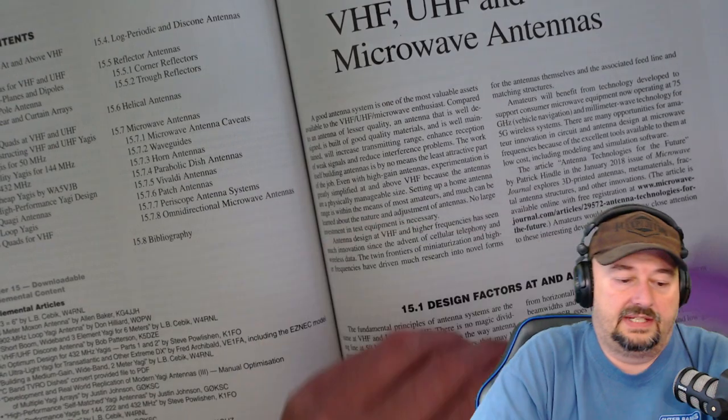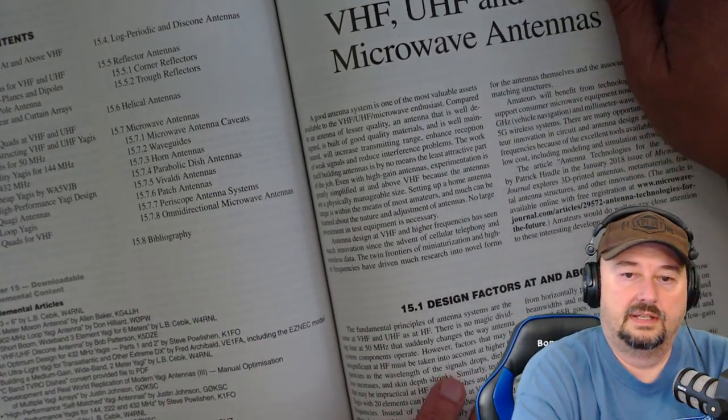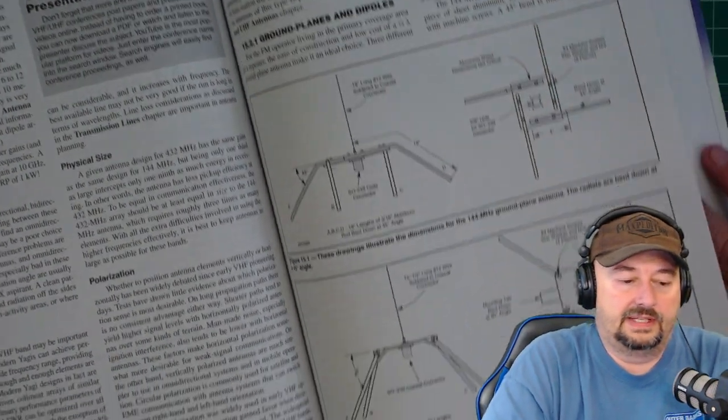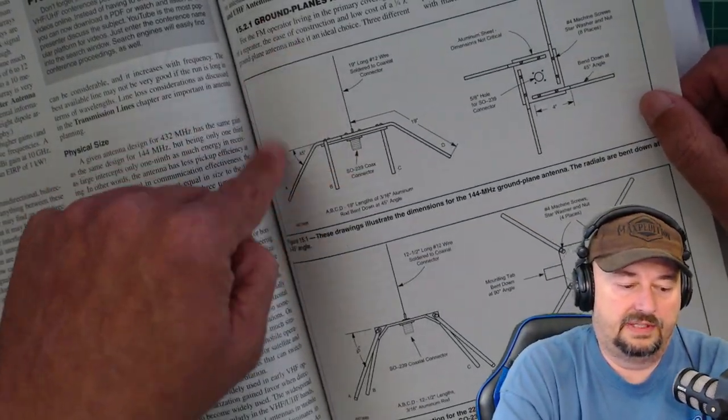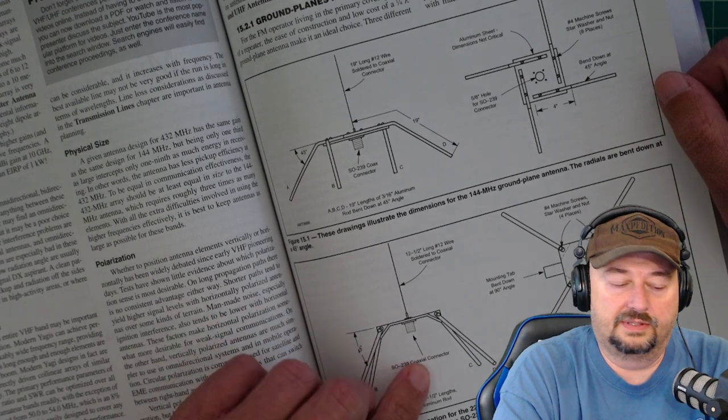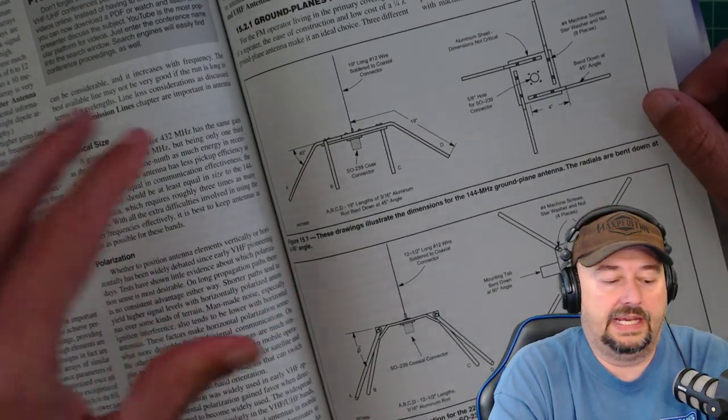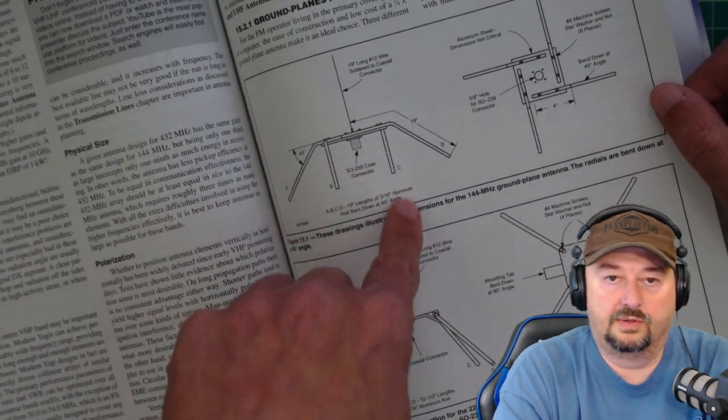A section on VHF, UHF, and microwave antennas, which I thought was pretty good. Here is an antenna that I actually have a video on building. It's these ground plane antennas for two meters. They work really, really well, and they're easy to build, and you learn about antenna theory while you're doing this kind of work. So, again, from a cookbook standpoint, that's really cool.